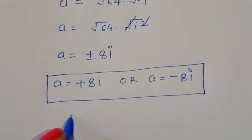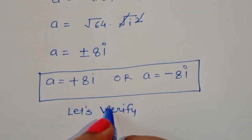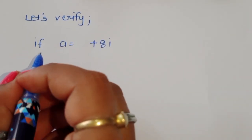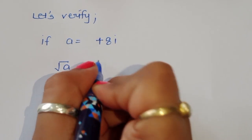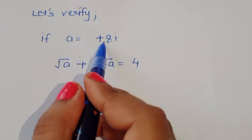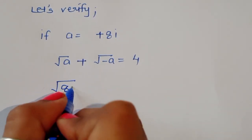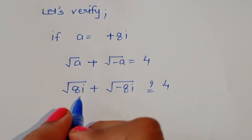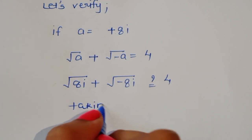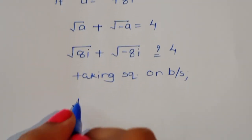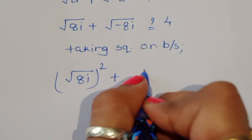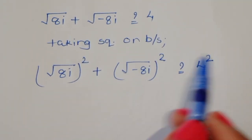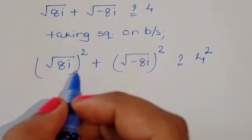So a = +8i or a = −8i. Let's verify this is correct. Substituting a = 8i into the original equation: √(8i) + √(−8i) = 4?